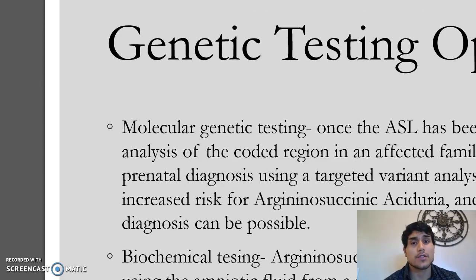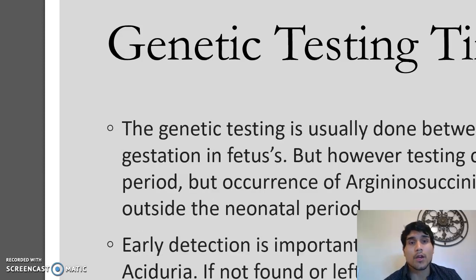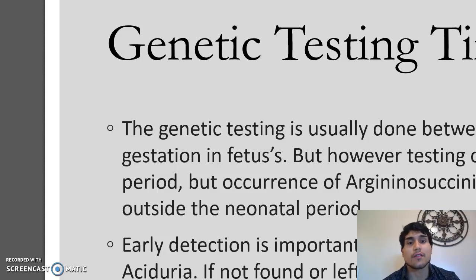For genetic testing options, there are two. For molecular genetic testing, once the ASL variant has been identified by sequencing, a targeted variant analysis can be used for a pregnant woman to make a genetic diagnosis. They can also do biochemical testing by using amniotic fluid from a fetus and examining the concentration of argininosuccinate in the amniotic fluid. The genetic testing timeframe is usually between 15 to 18 weeks of gestation, though testing can be done at any time past this period.